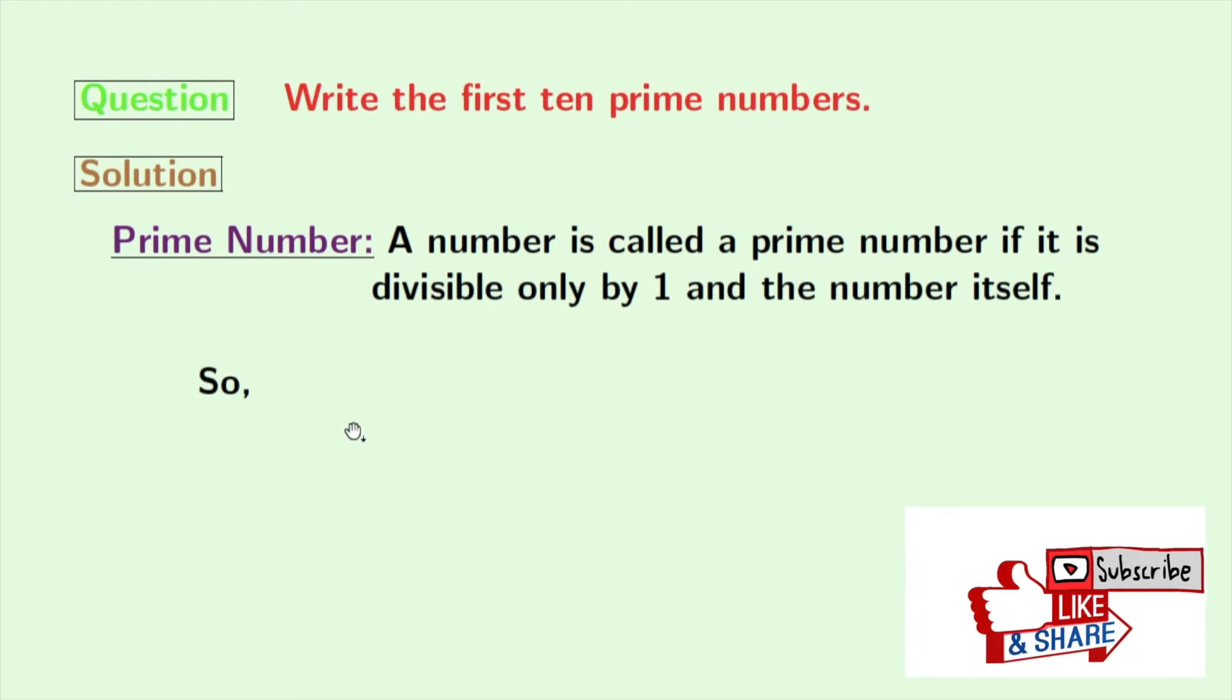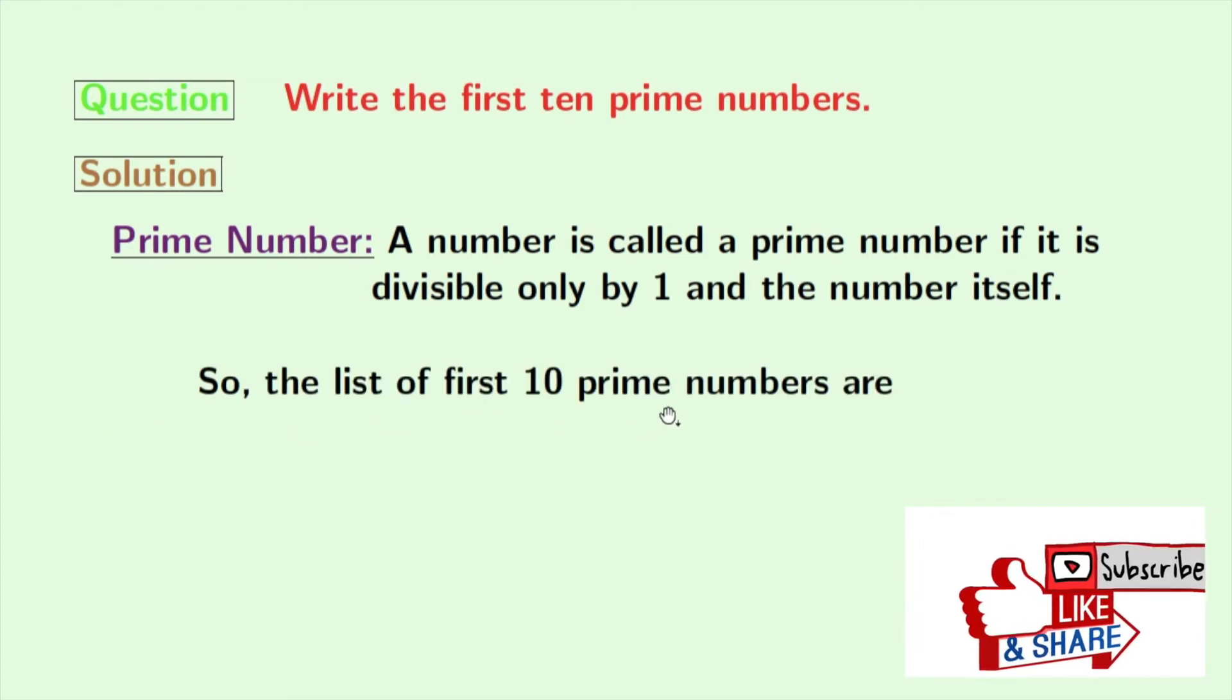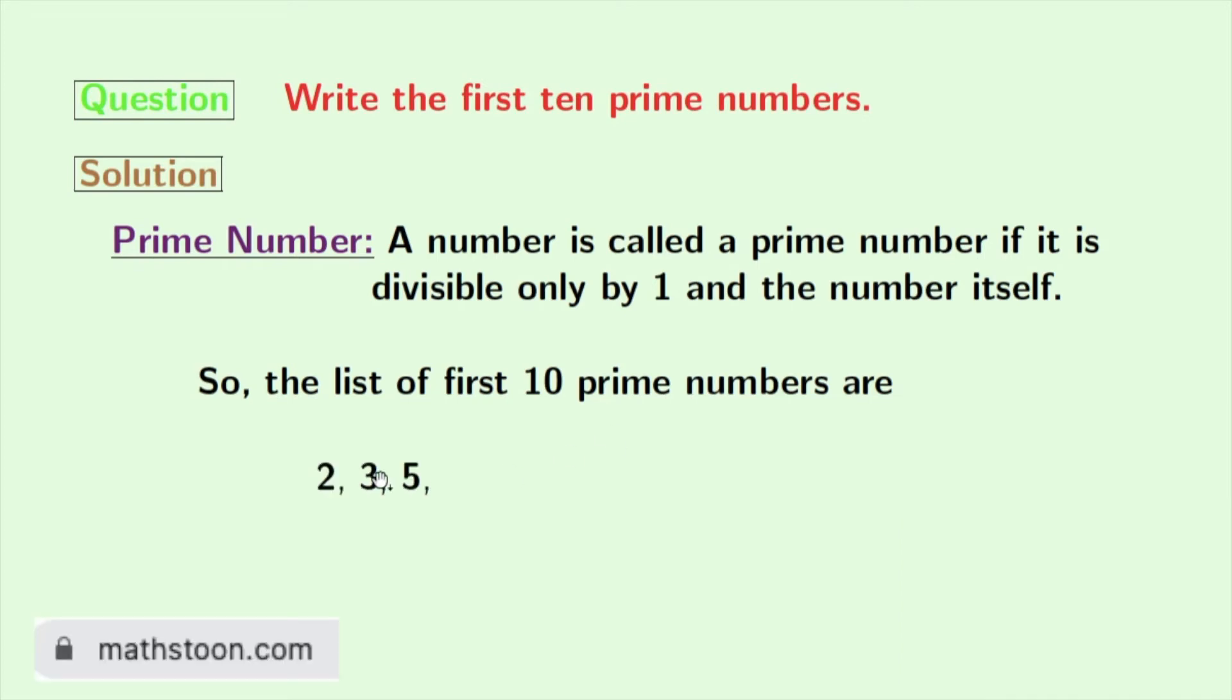So, by the definition of a prime number, we can say that the first 10 prime numbers are 2, 3, 5, 7, 11, 13, 17, 19, 23, and 29.